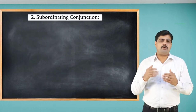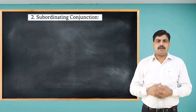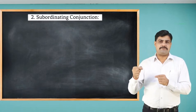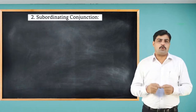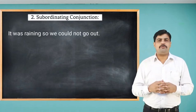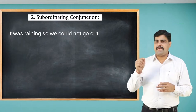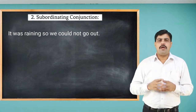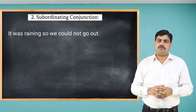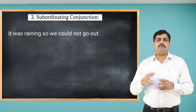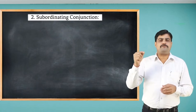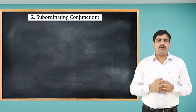The second type is subordinating conjunctions. These conjunctions connect subordinating clauses to the main clause. For example: 'It was raining so we could not go out.' Here, 'so' connects the two clauses: 'it was raining' and 'we could not go out.' Here is a list of some conjunctions with their uses.